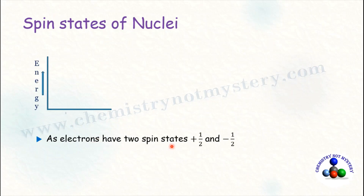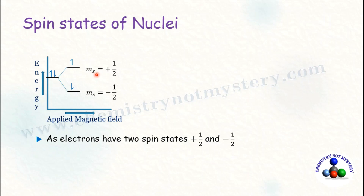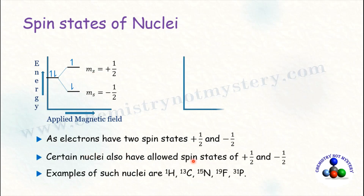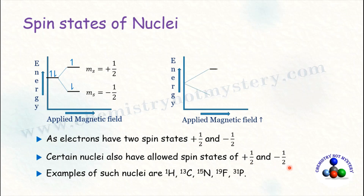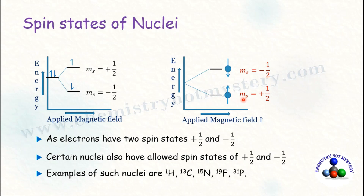Electrons have two spin states, plus half and minus half, denoted by spin quantum number MS. Similarly, some nuclei also have allowed spin states of plus half and minus half — for example, H-1, C-13, N-15, F-19, and P-31. The only difference is that for electrons the lower spin state is minus half, while for nuclei the lower spin state is plus half.